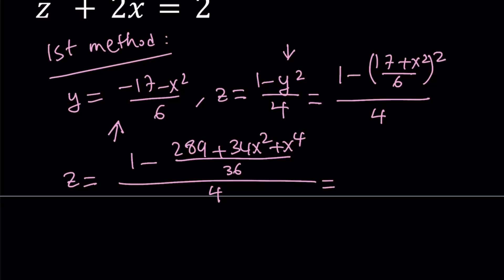And then, to simplify, we're going to make a common denominator in the numerator and then multiply the denominators. 36 times 4 is going to give us 144. So 1 times 36 is going to be 36 minus 289, that's going to be negative 253.